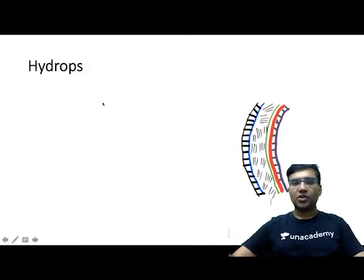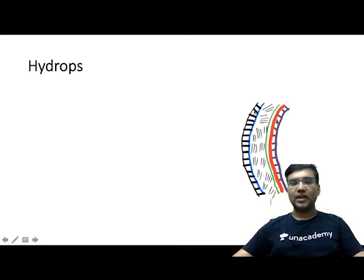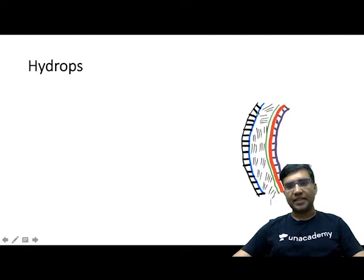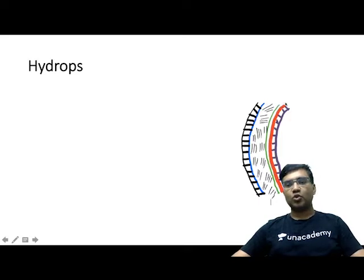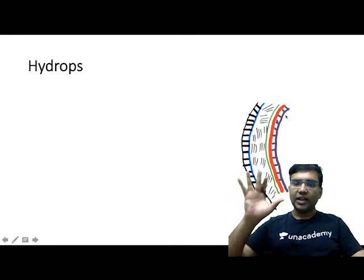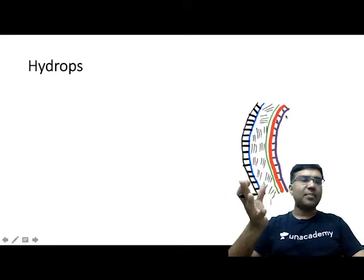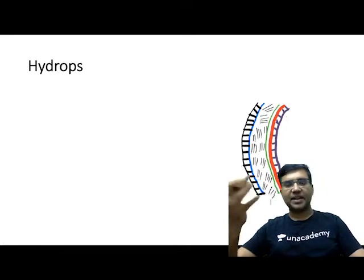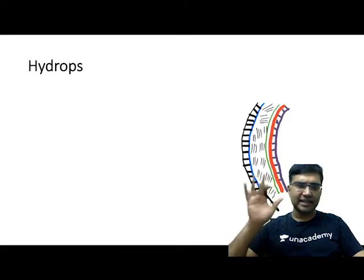The next thing is hydrops. If you can see here, there are various layers of cornea: the epithelium, then the epithelium basement membrane (shown in blue), then stroma, then Dua's membrane, followed by Descemet's membrane and endothelium.